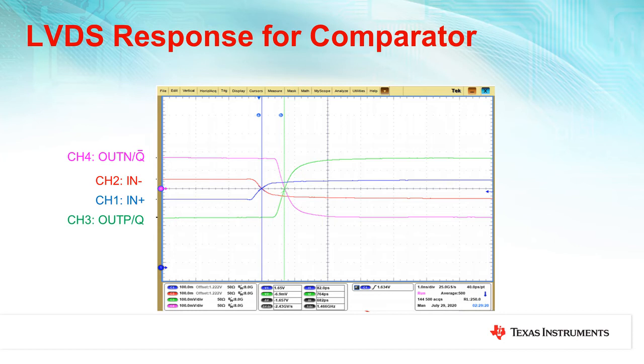When channel 2 is greater than channel 1 input signal, you can see that Q bar is high and Q is low. The differential voltage between these two outputs is roughly 350 millivolts as seen on the scope. When the inputs cross and channel 1 is greater than the channel 2 input signal, the outputs also toggle, and you can see now that Q is high and Q bar is low, but still maintaining a 350 millivolt differential voltage.